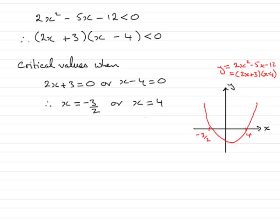Now, we're looking for where this quadratic expression here, 2x plus 3 times x minus 4, or 2x squared minus 5x minus 12, is less than 0. Remember, this is the y value. And we're looking for where y then is less than 0. Where it's negative. And it's negative on this part of the graph down here, where it's below the x axis.